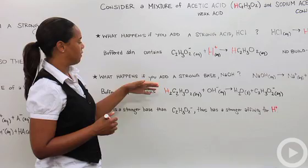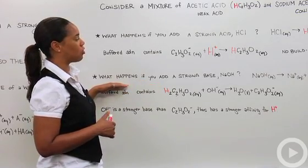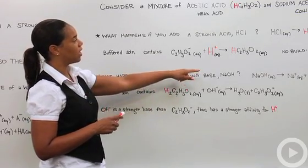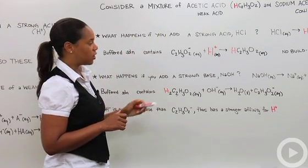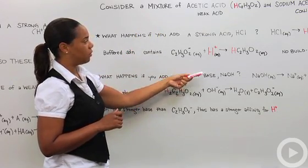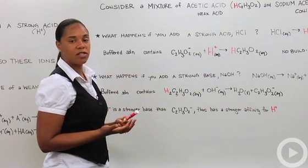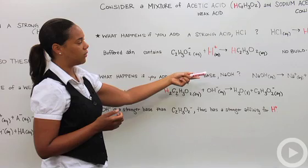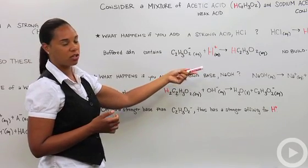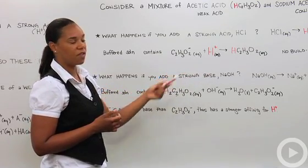Let's do the other side of that. What happens if we add a strong base in the form of sodium hydroxide to this mixture of acetic acid and sodium acetate? Again, a strong base, much like a strong acid, is going to dissociate completely in solution. Sodium hydroxide would dissociate to give us a sodium ion with a plus charge and a hydroxide ion with a minus charge.